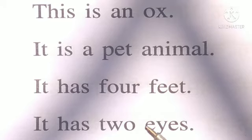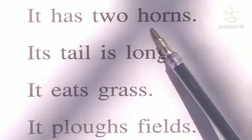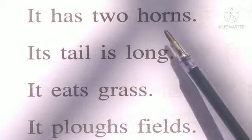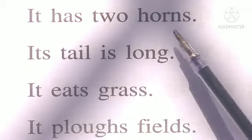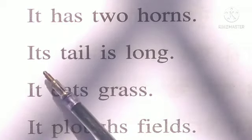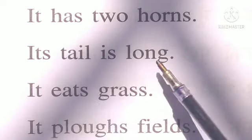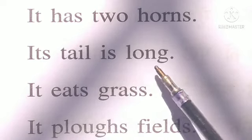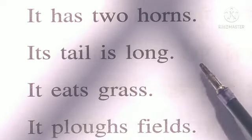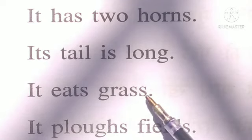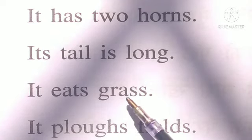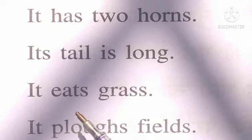It has two horns. Horns yani sing. Two yani do, is ke do sing hote hai. Its tail is long. Tail yani pooch, long yani lambi. Is ki pooch lambi hoti hai.